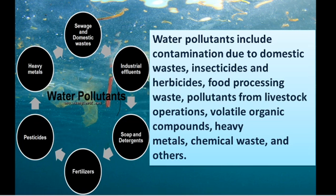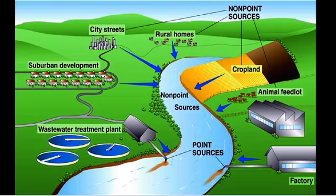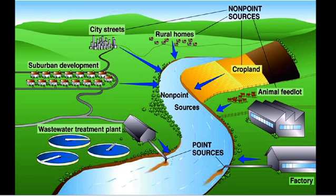These pollutants make the water impure. Industrial wastages from our homes as well as from agriculture fields — like fertilizers and pesticides — are the main causes of water pollution. In this picture we can see various places: from the rural side, the city side, waste water treatment plants, factories, and animal feedlots. All of these discharge their wastages into water bodies like rivers, lakes, sea, or ponds, causing pollution.